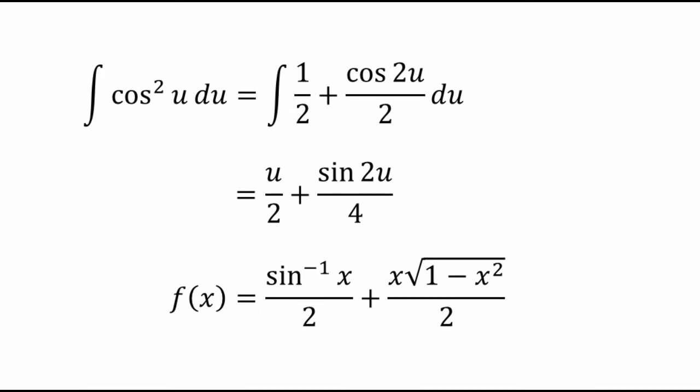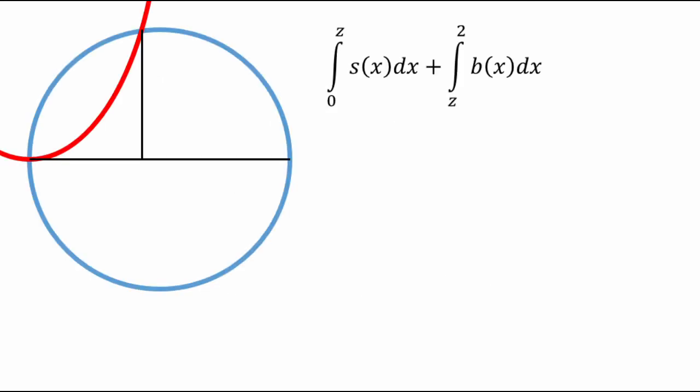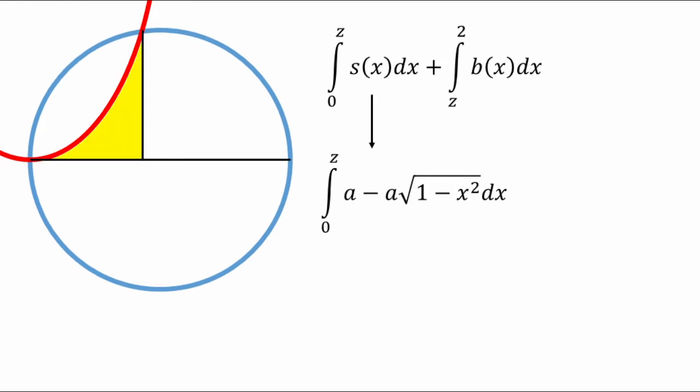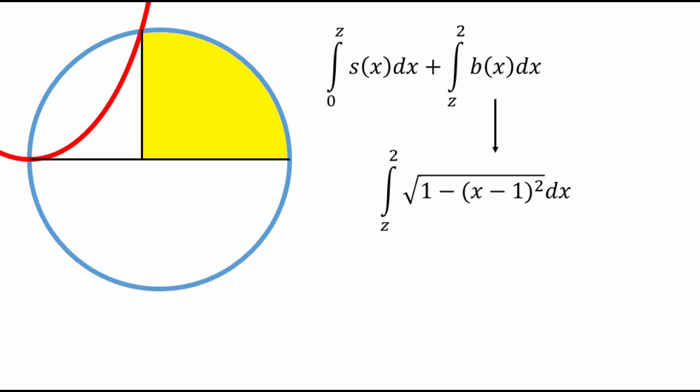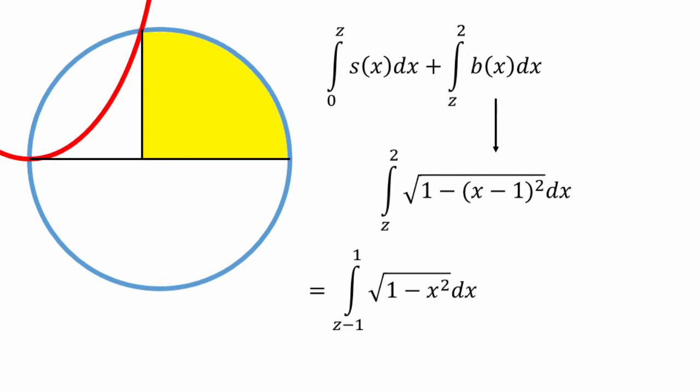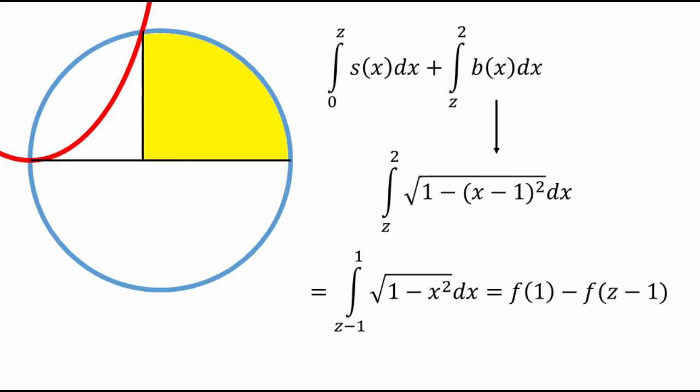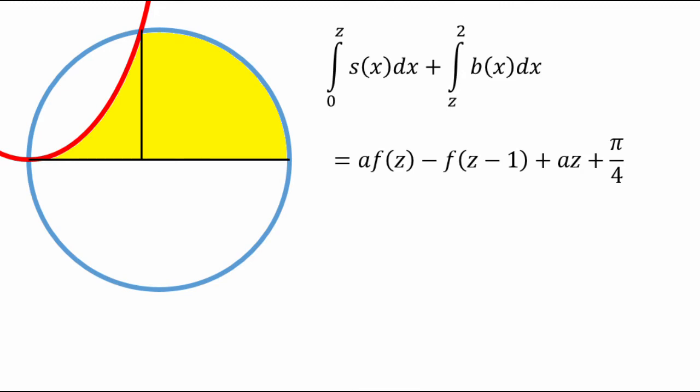Let's refer to this from here on out as f of x. We can use this f function to describe the area of the upper half of the blue ball. This first integral of s of x from 0 to z turns into a times z minus a times f of z minus f of 0. We can translate the second integral one unit to the left so that the integrand becomes root 1 minus x squared, but the limits are now from z minus 1 to 1 instead of from z to 2. So this integral becomes f of 1 minus f of z minus 1. We can simplify this further by noting that f of 0 is equal to 0 and f of 1 is equal to pi over 4.